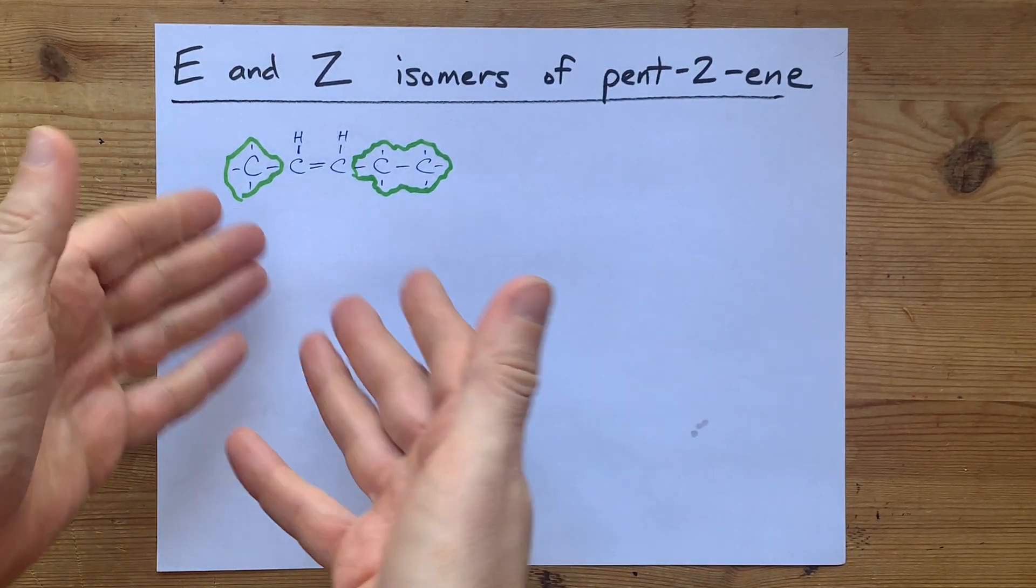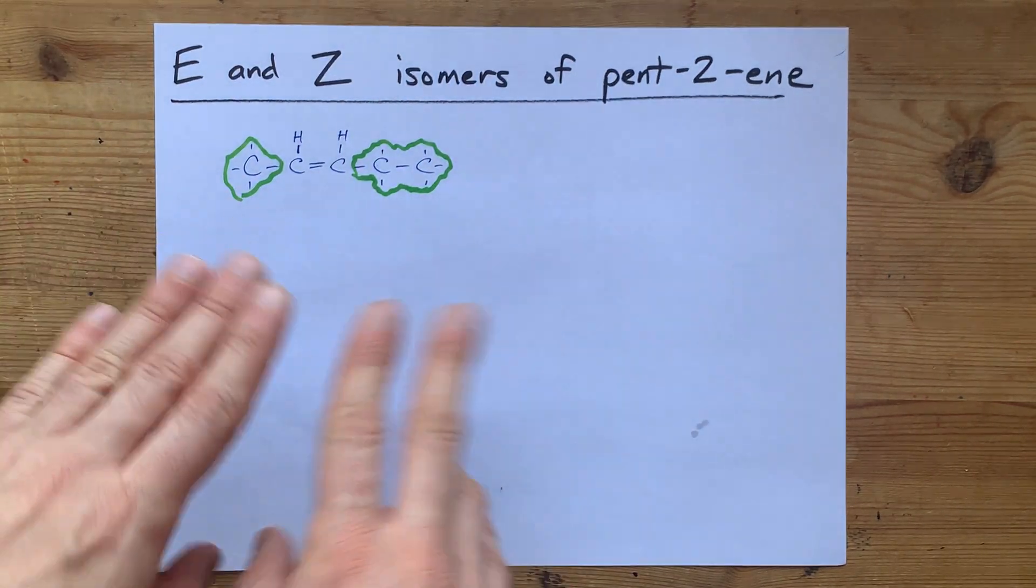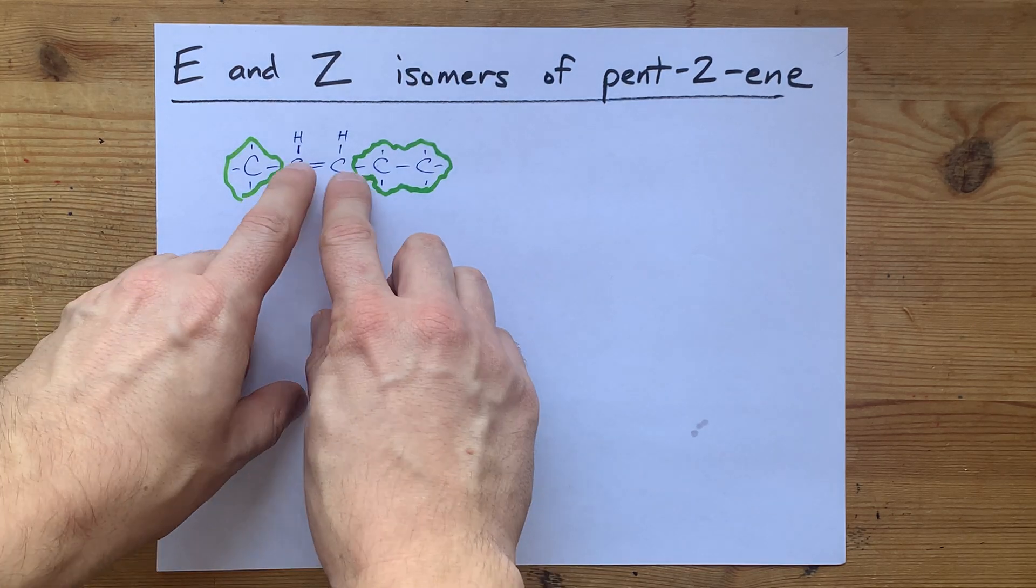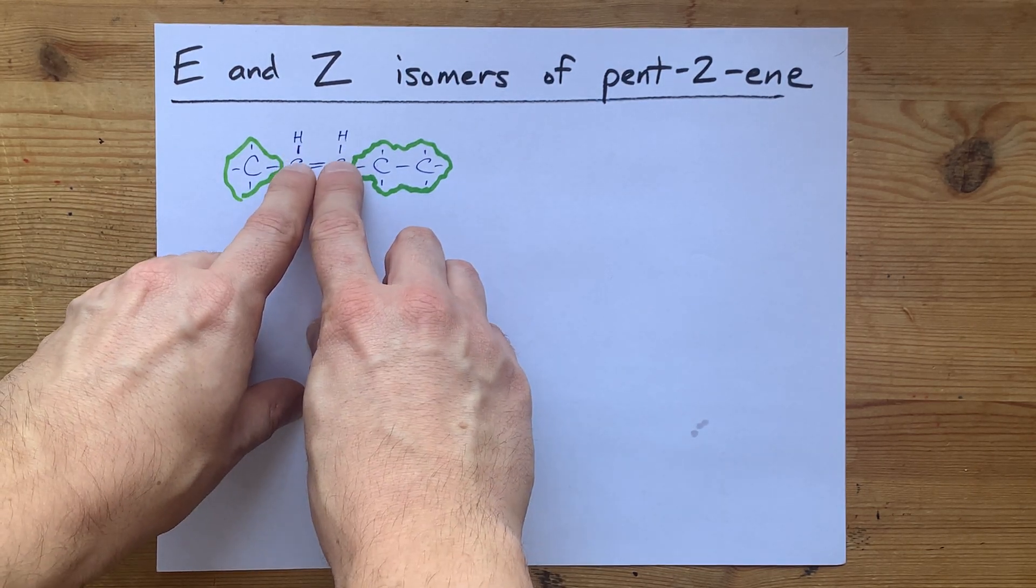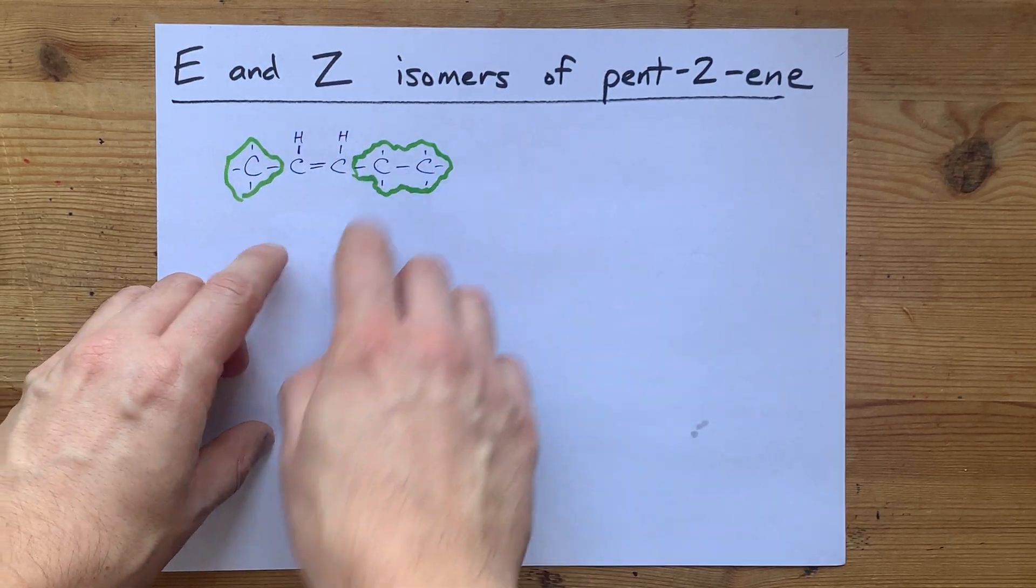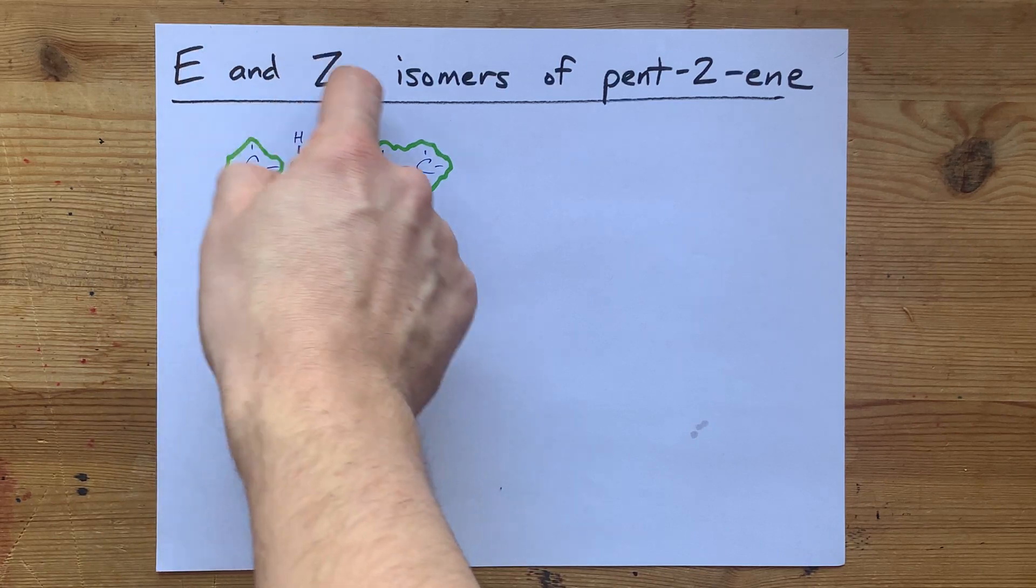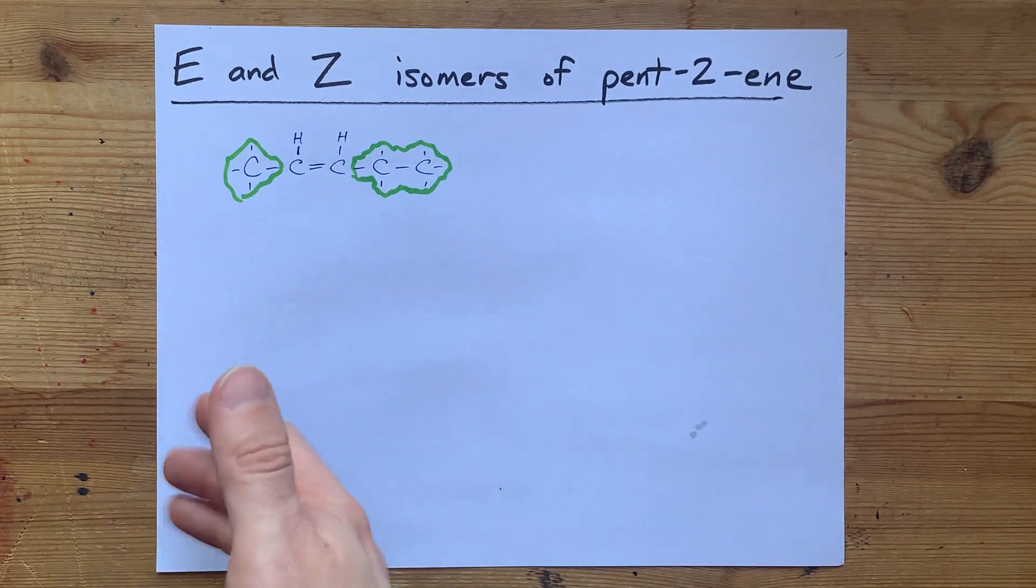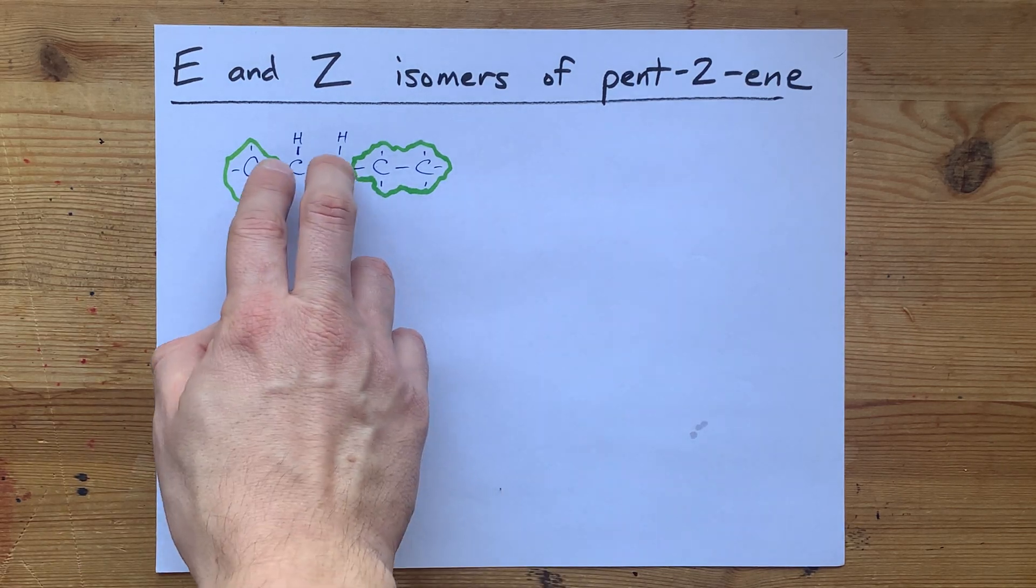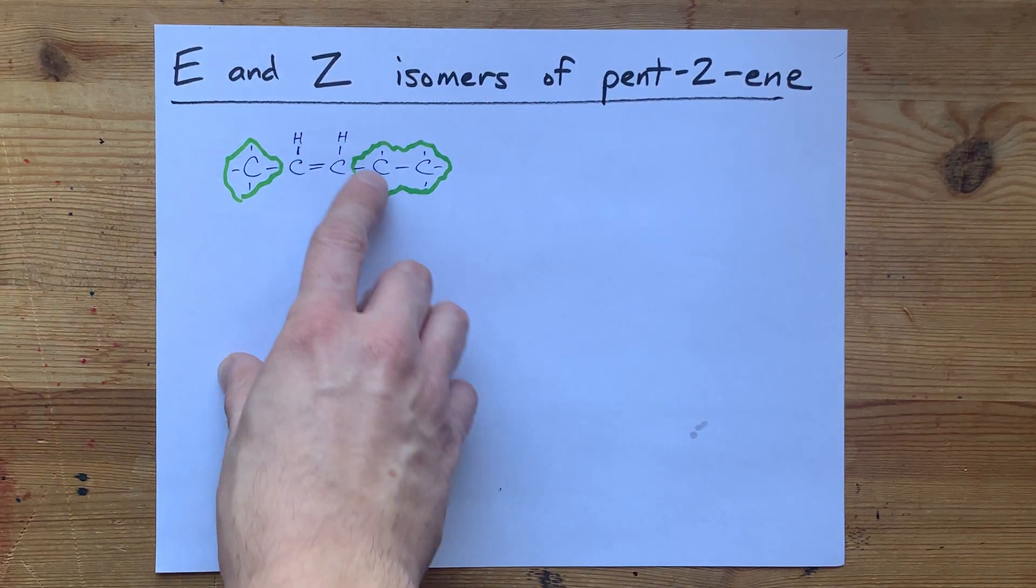Now, here's where E and Z are more powerful than cis and trans. Cis and trans is for when you have two of the same group, and they are either both on the same side of the double bond or on opposite sides of the double bond. E and Z Cahn-Ingold-Prelog rules can be used as long as the two branches are different. So it didn't matter that both of these were H. It was H versus C and H versus C.